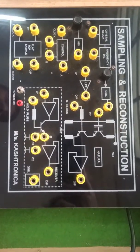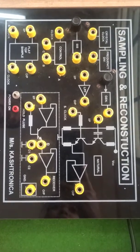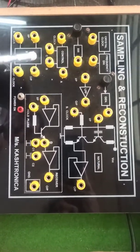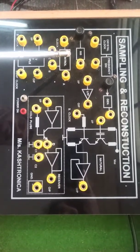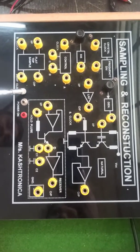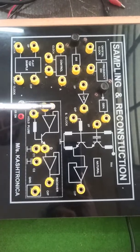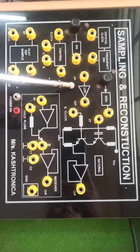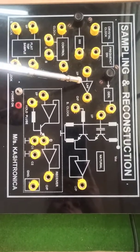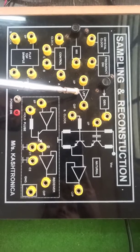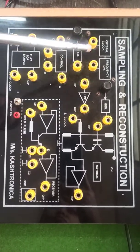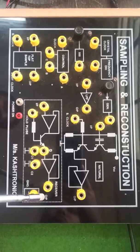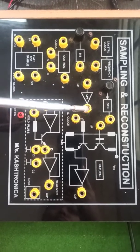Good morning everyone. Today we are going towards the experiment that is sampling and reconstruction. Here is the sampling and reconstruction kit. This portion is the natural sampling part, here is the flat-top sampling part, and the dotted block is the receiver side. One block is given at the receiver — the low pass filter, the demodulated block. It blocks the high frequency, attenuates the low frequency, and we get the original signal. So in this kit there are three parts: natural sampling, flat-top sampling, and the receiver side, and the receiver output is given as input to the low pass filter to get the original signal.